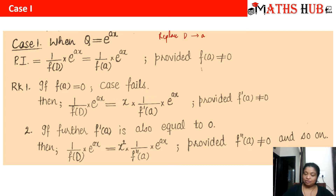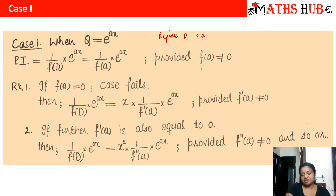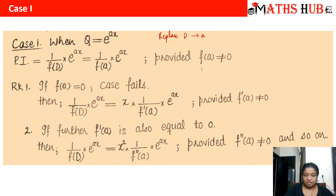If f(a) becomes equal to zero then the case fails because it gives a 1/0 form. In that situation we multiply the numerator by x and differentiate the denominator, giving f'(a), then replace D with a again. If f'(a) is also not zero, that is the answer. If it is also zero, we multiply by x again to get x² in the numerator and take the second derivative f''(a) in the denominator.